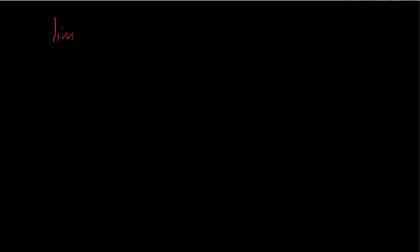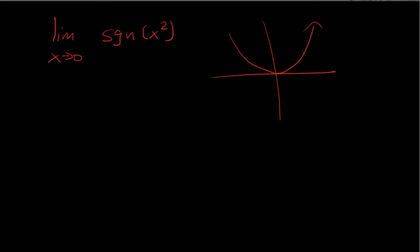I want to solve the limit as x approaches 0 of sign of x squared. So sign of x squared — well, x squared is going to be positive when x is not equal to 0. So when x is not equal to 0, sign is going to be 1. It's going to be 0 when x is equal to 0. So it's never going to be negative.